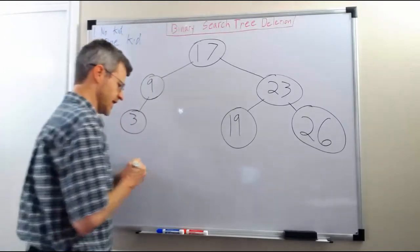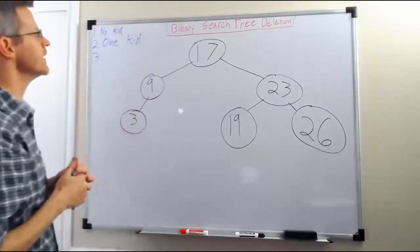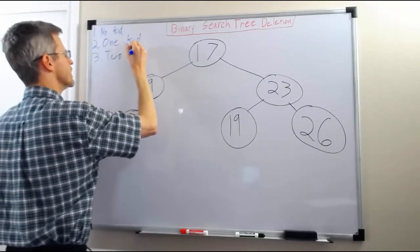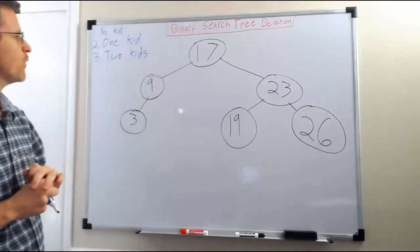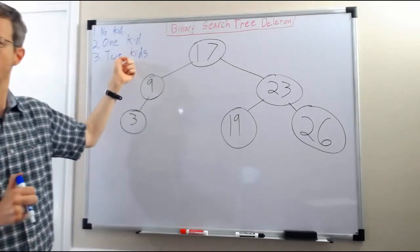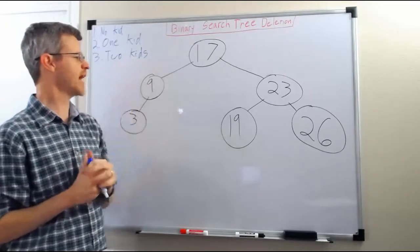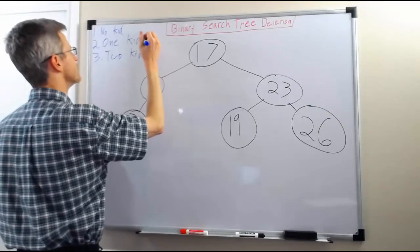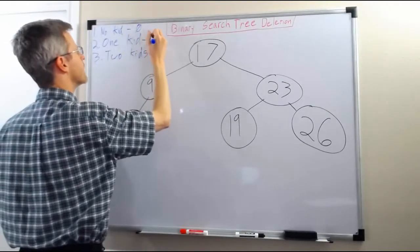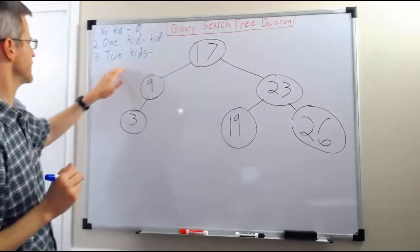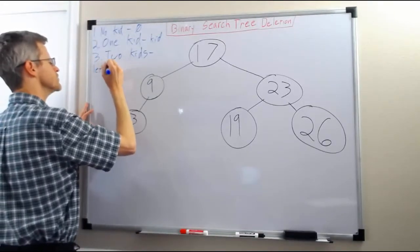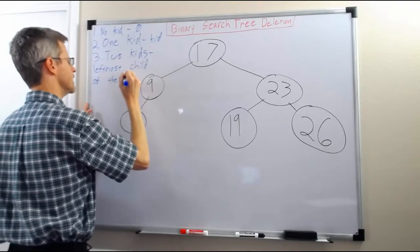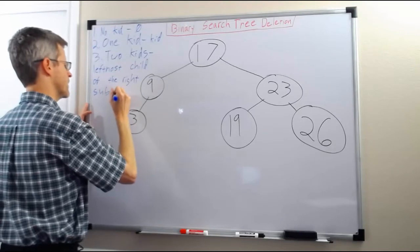And then the last case, and the most complicated one, is when the node to be deleted has a subtree on each side — I'm just going to abbreviate it here as two kids. In this case, what we need to do is find a single node to promote up, and it needs to maintain the ordering of the binary search tree. In order to do this, we promote the leftmost child of the right subtree.